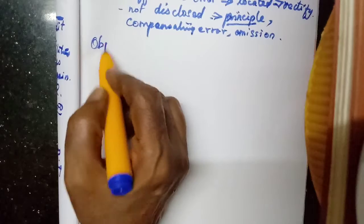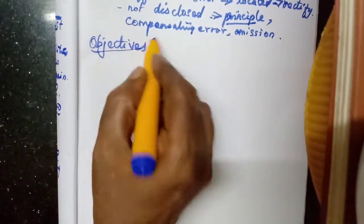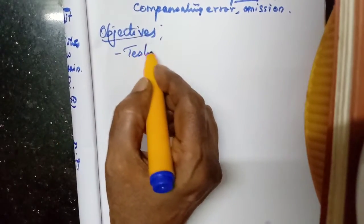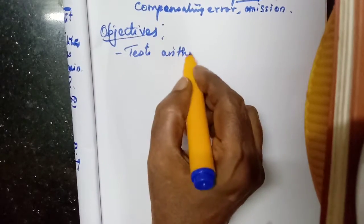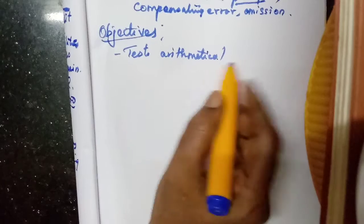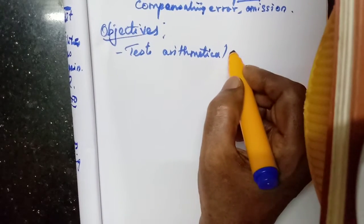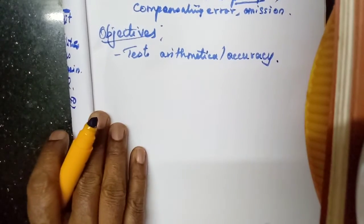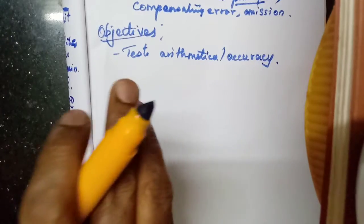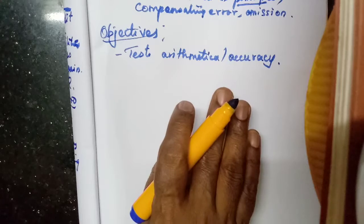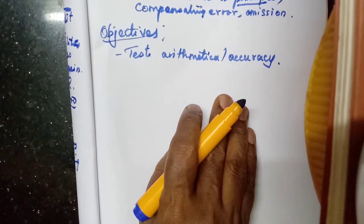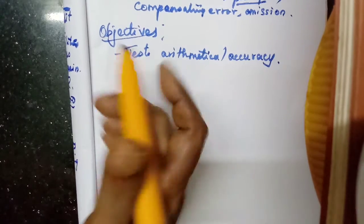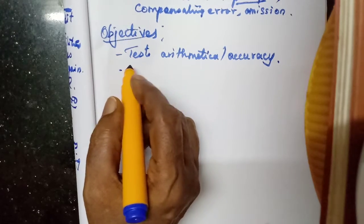The objectives of trial balance are similar to its features. The main objective is testing the arithmetical accuracy. Trial balance is mainly prepared to check that all additions, subtractions, and calculations — everything we have written — are correct.